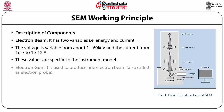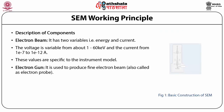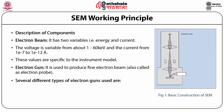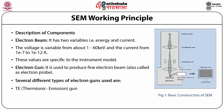The electron gun is used to produce a fine electron beam, also called an electron probe. There are several different types of electron gun: TE thermionic emission gun, FE field emission gun, and SE Schottky emission gun.